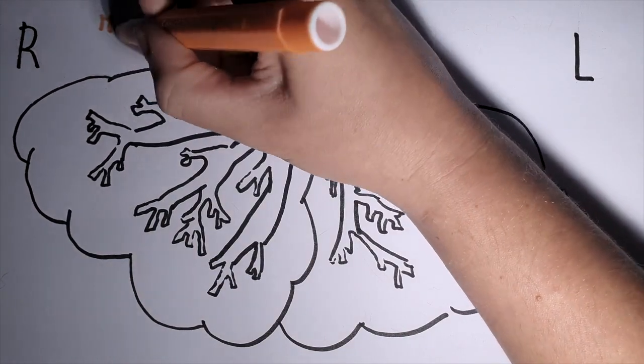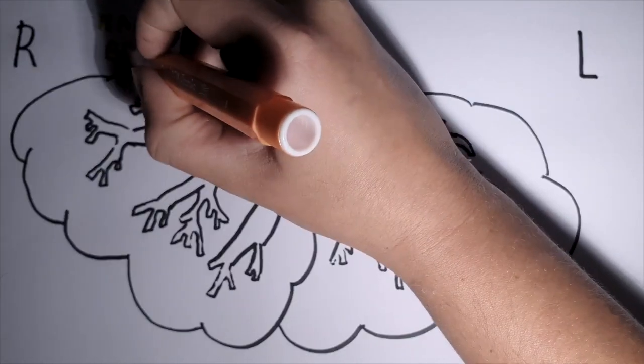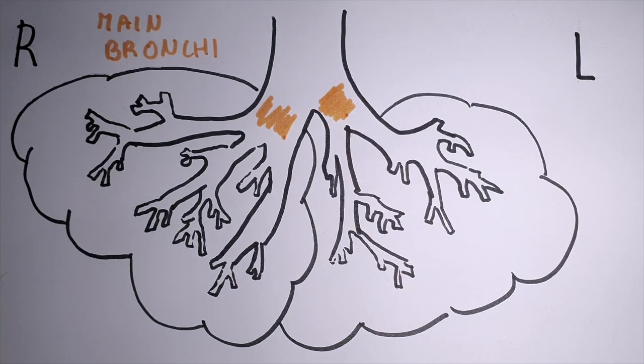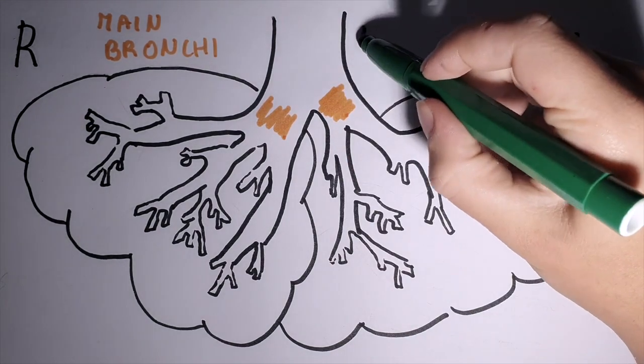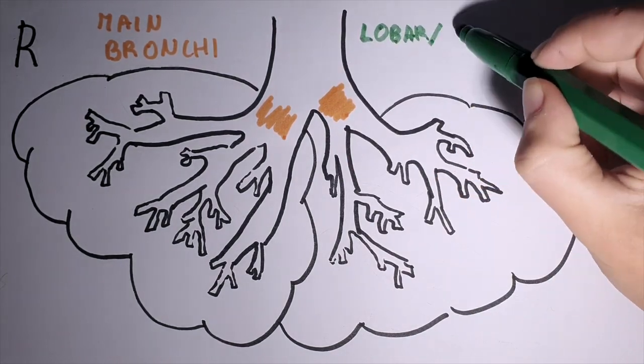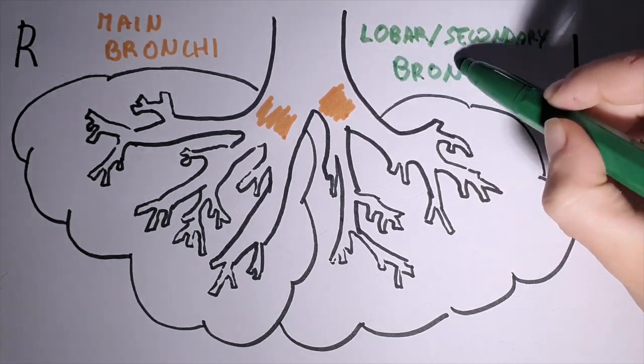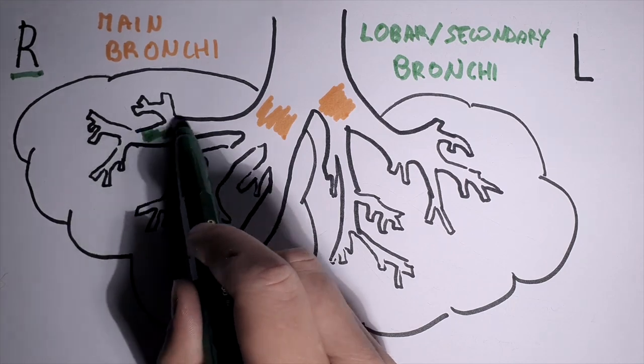The first branches are two and they're called the main bronchi, entering the root of the lungs. They are slightly different in length and orientation, as well as their branches. In fact, the right lung is of three secondary or lobar bronchi, whereas the left one ends in two lobar bronchi.